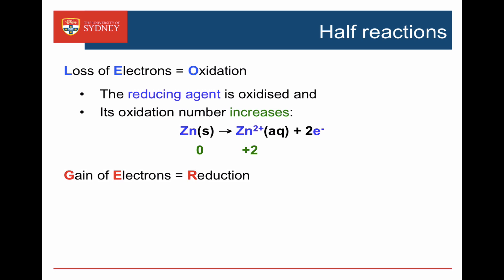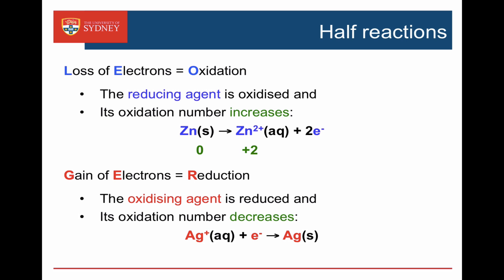Reduction reactions involve the gain of electrons. In these, an oxidizing agent is reduced and its oxidation number decreases. Here we have silver ions gaining an electron to go to silver metal, and the silver is going from plus one to zero — its oxidation number is decreasing.